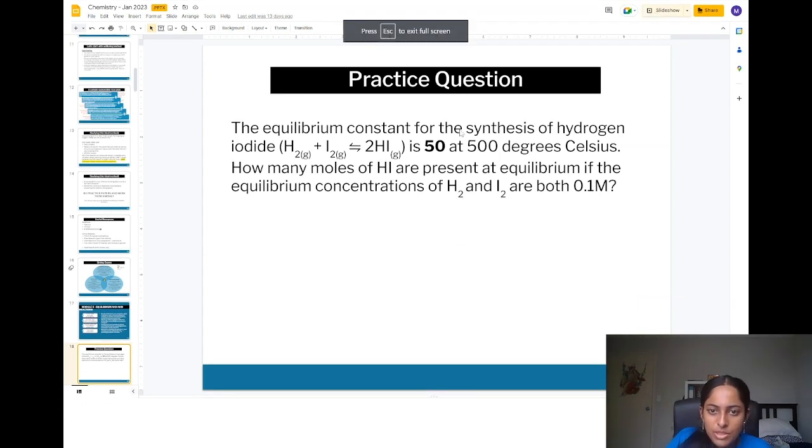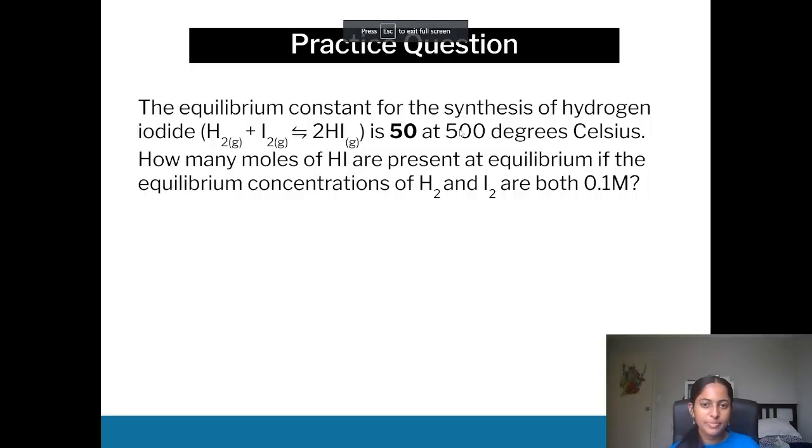So let me just go back to slideshow. I'm just going to go through the questions. It's giving you an equilibrium constant which is 50 at 500 degrees Celsius. It's given you the equation as well and it's asking how many moles of HI are present at equilibrium if the concentrations of H2 and I2 are both 0.1. Equilibrium concentration is also given so we just have to plug it in into the Keq expression.